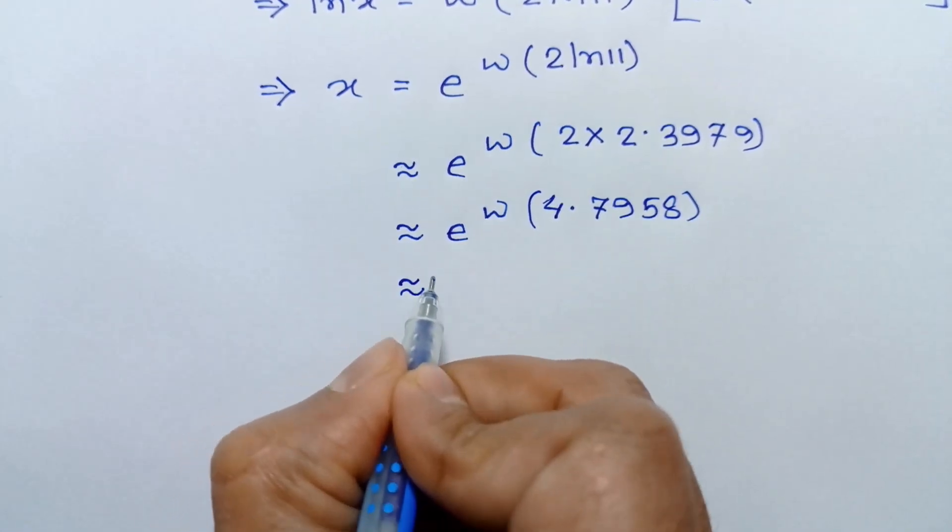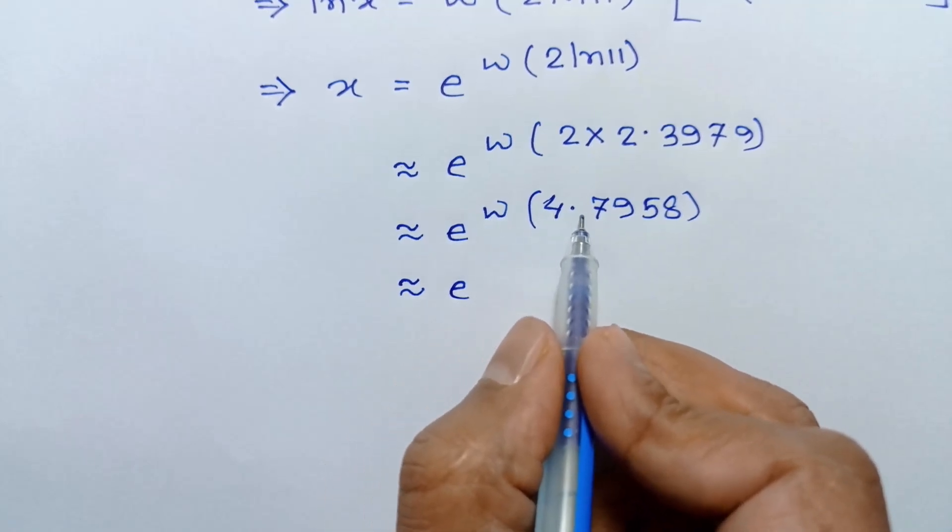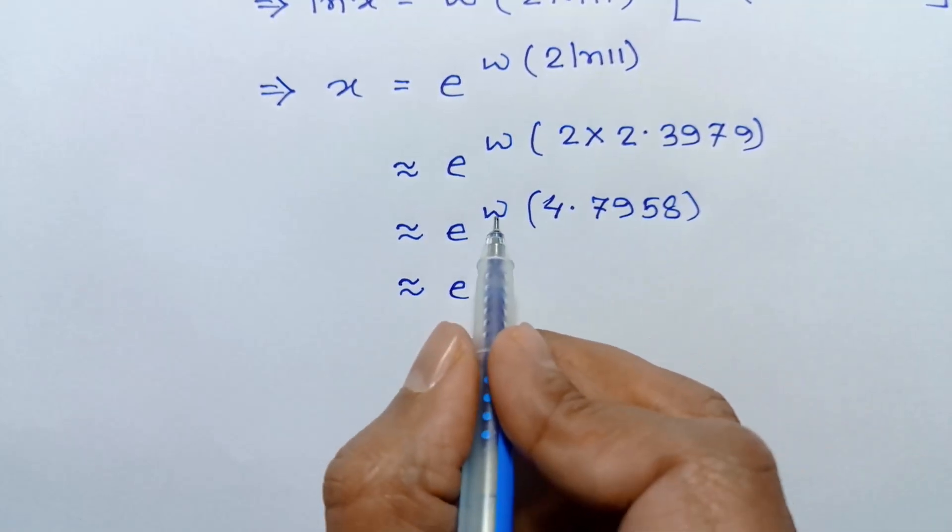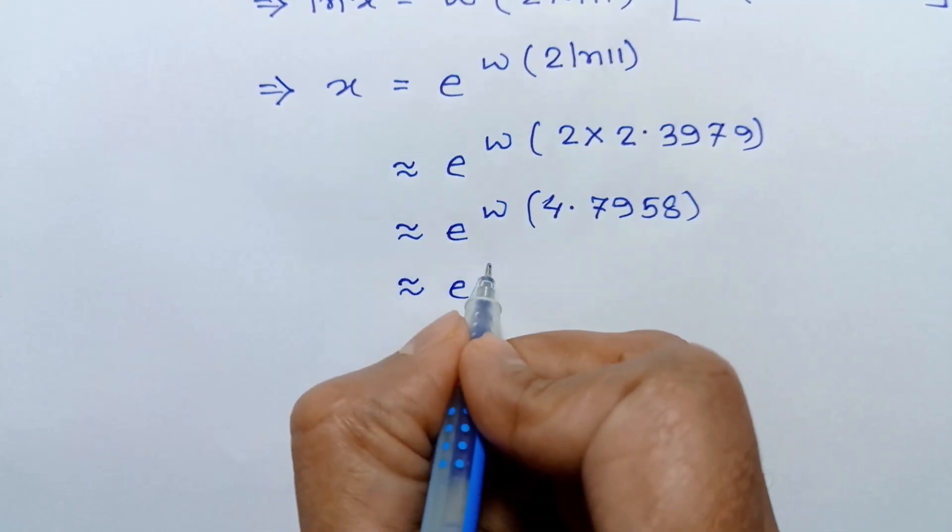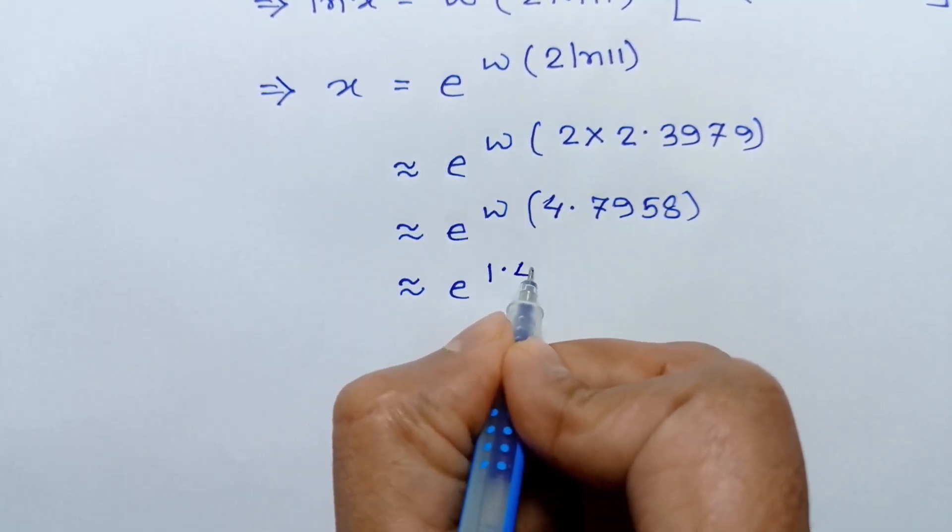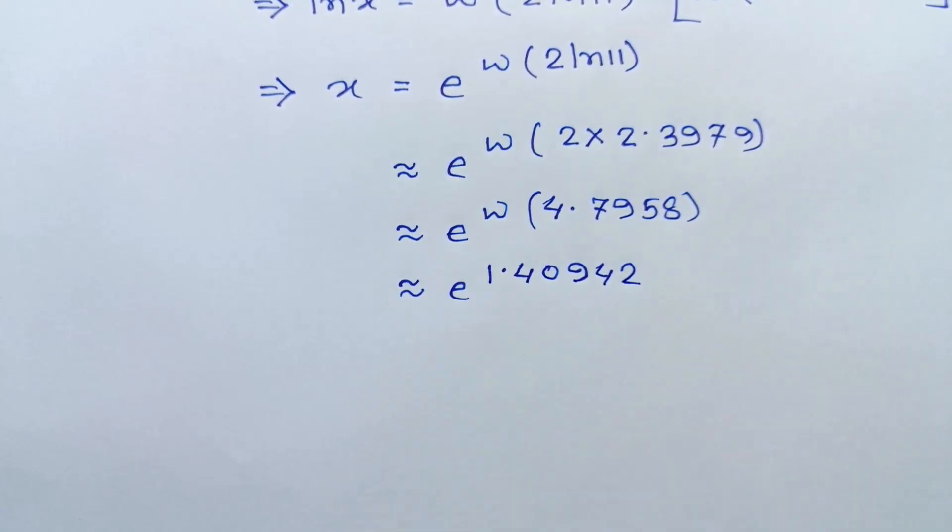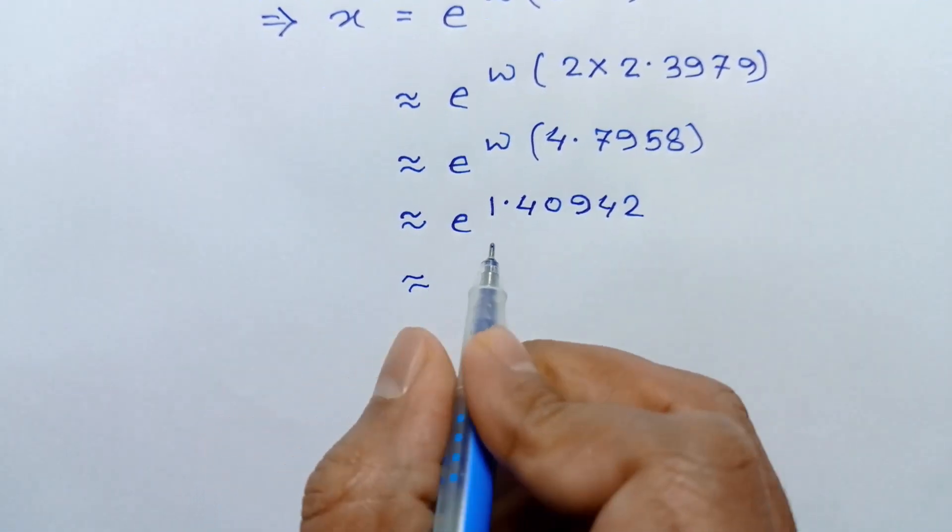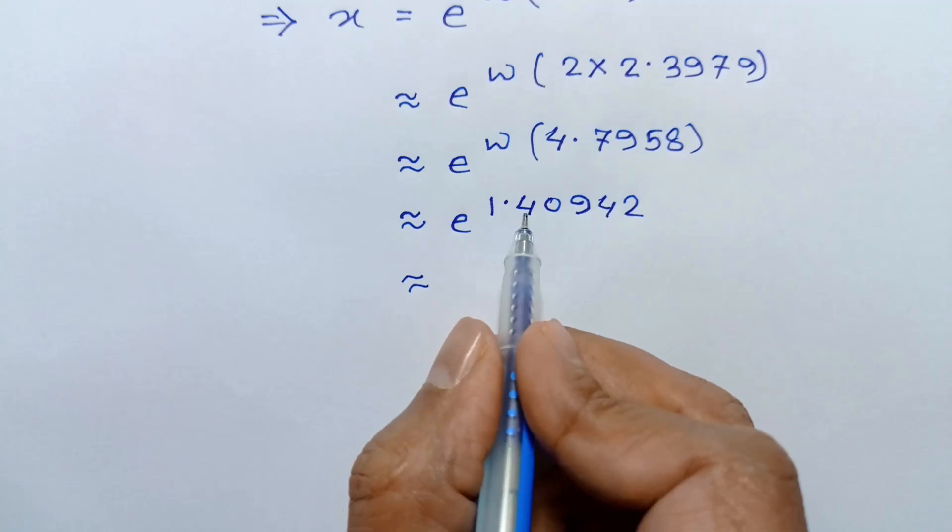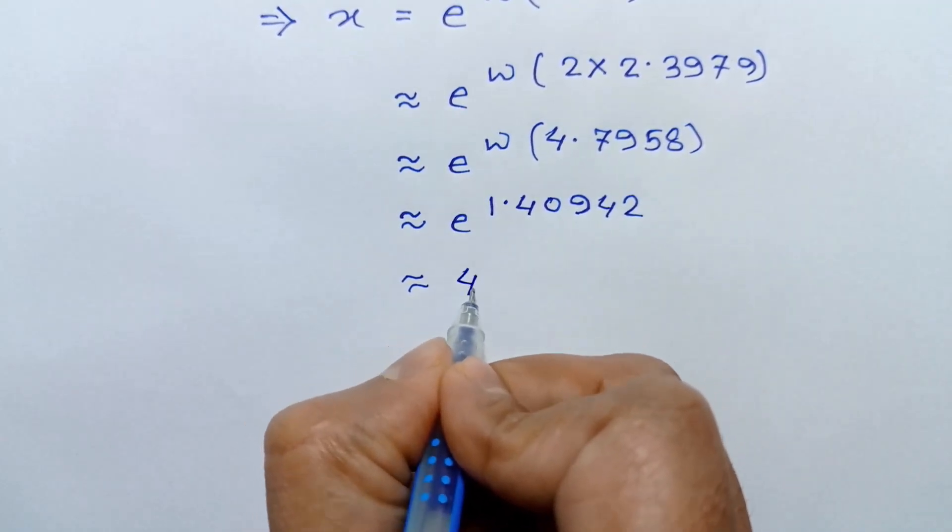The value of this W function of 4.7958 is 1.40942. So the value of e to the power 1.40942 is 4.093.